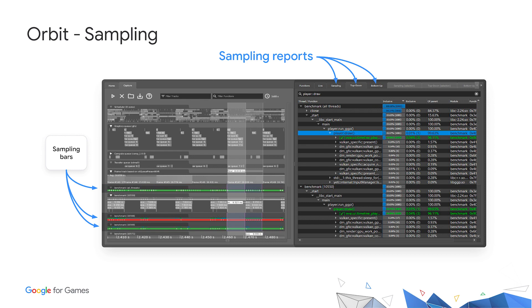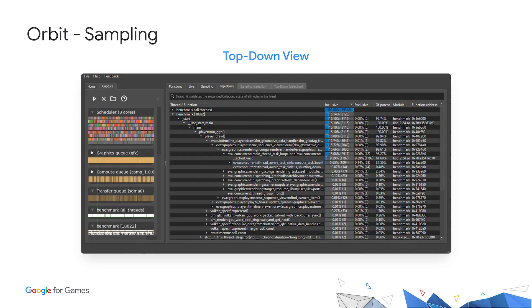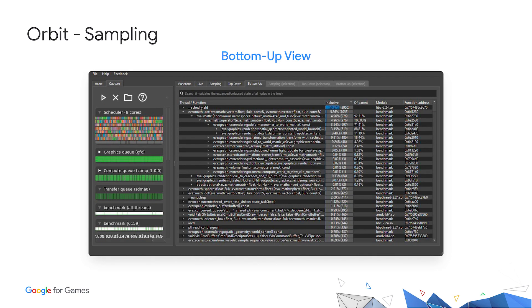The flat view is a flat list of functions which can be ordered by how often they were present anywhere in the call stack, or by how often they were actually executing at the time of the sample. It is also possible to generate reports for a selection of samples by interacting with the sample bar. The top-down view presents sampling data as an intuitive call graph — expanding nodes lets you traverse the call hierarchy from parent to child. The bottom-up view allows you to see which functions are being executed the most, and expanding nodes lets you traverse from child to parent.